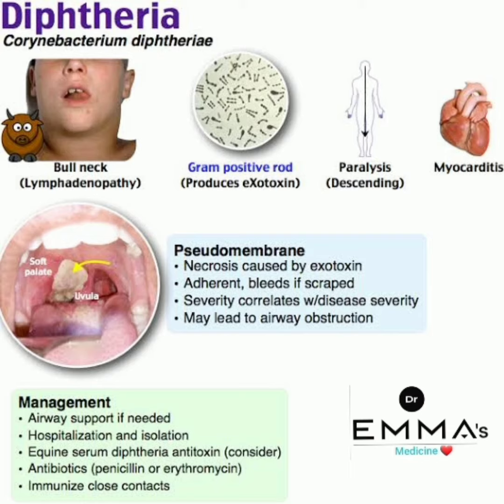In diphtheria there is bull neck lymphadenopathy; the gram-positive rod produces an exotoxin, and paralysis presents in a descending manner. Myocarditis is also present. There is a pseudomembrane: necrosis caused by the exotoxin, which is adherent and bleeds on scraping. Its severity correlates with disease severity and it may lead to airway obstruction.